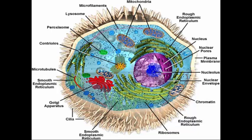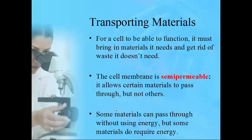When it comes to these organelles, you need to be able to match the function to the correct organelle — that will come up on the chapter test. For a cell to function, it must be able to get the material it needs inside the cell and get rid of waste. The cell membrane is classified as semipermeable, or selectively permeable — meaning some things can pass through it and some things can't.